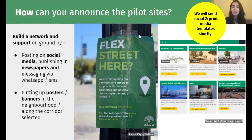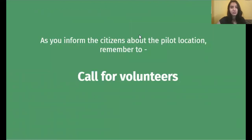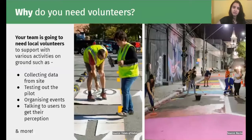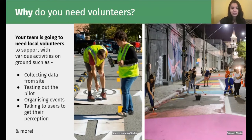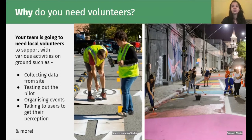We will also be sending a social and print media template to you shortly, so that all you need to do is replace your city name in that template and roll it out on social media and print media. The next step is, as you inform your citizens about the pilot location, you must also remember to call for volunteers. You are going to need volunteers for various reasons throughout the entire process of testing out the interventions — activities such as collecting data from the site, testing out the pilot, organizing events, talking to users to get their perceptions, and many other such tasks that require a lot of people on the ground.